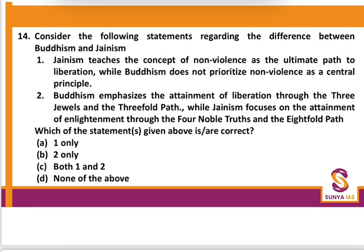Question 14: Differences between Buddhism and Jainism. Statement 1 — Jainism teaches non-violence as the ultimate path to liberation: absolutely true — they did not even allow killing insects in agriculture. Statement 2 — Buddhism does not prioritize non-violence as the central principle: absolutely correct. Statement 3 — Buddhism emphasizes liberation through the Three Jewels, while Jainism focuses on enlightenment through the Four Noble Truths and Eightfold Path: this is reversed — the Three Jewels and Tri Ratna belong to Jainism, and the Four Noble Truths and Eightfold Path belong to Buddhism. So only statement 1 is correct.